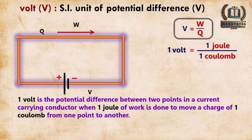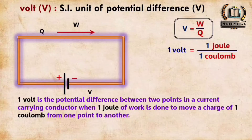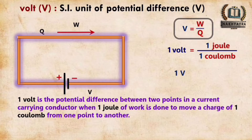The potential difference is created by the cell, and the current-carrying conductor carries a charge of one Coulomb. When one joule of work is done from one point to another, that is your one volt. This definition is very important — keep it in mind. Therefore, 1 volt = 1 joule per Coulomb.